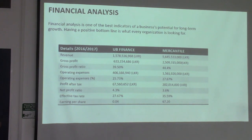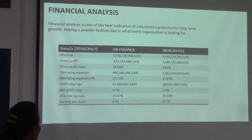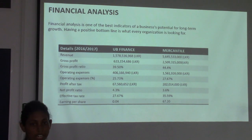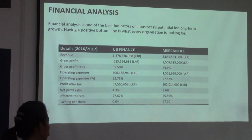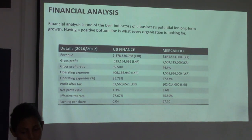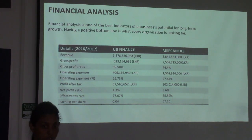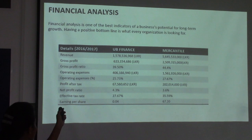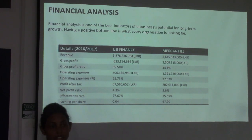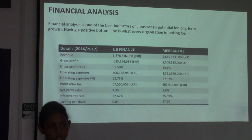I will be doing the financial analysis part, taking a few key figures. Looking at gross profit, the gross profit of Mercantile Investments is higher than that of UB Finance. The gross profit ratio of Mercantile Investments is 44.4%, whereas the gross profit ratio of UB Finance is 39.50%, meaning Mercantile Investments has the ability to generate more gross income. For profit after tax, UB Finance is 67.5 million and Mercantile Investments is 202 million rupees.